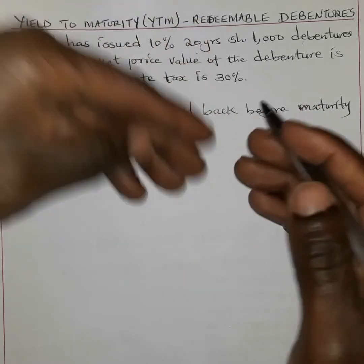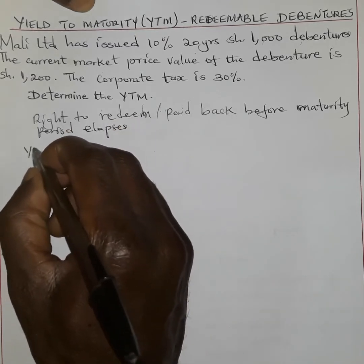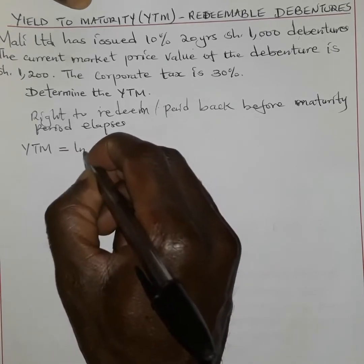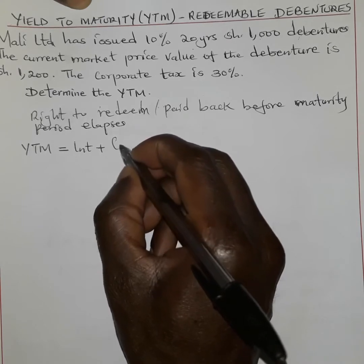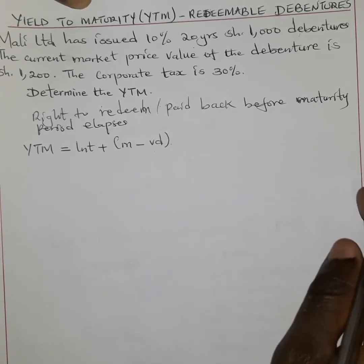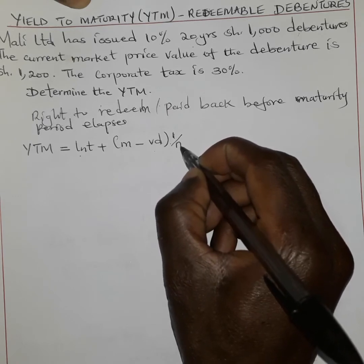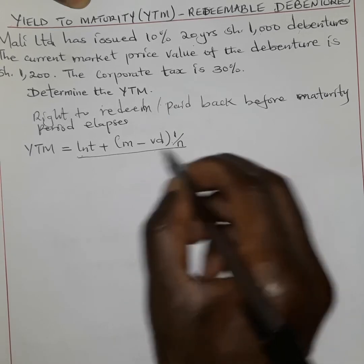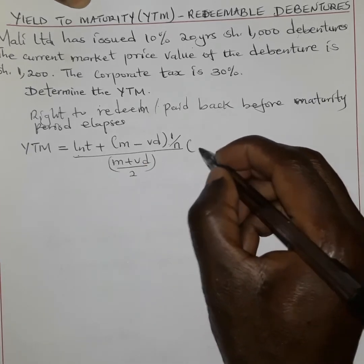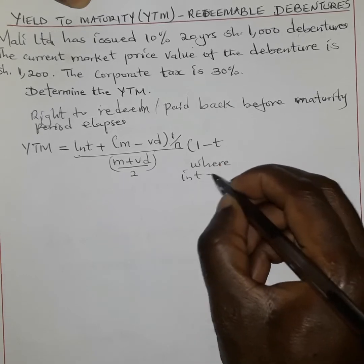When we talk about the yield to maturity of these bonds or debentures, we are talking about factoring in the interest, which is added to the maturity or par value of the debenture, minus the market value of the debenture (which is VD), multiplied by 1 over n. We then divide by M plus VD divided by 2 to get the average, and multiply everything by 1 minus t.